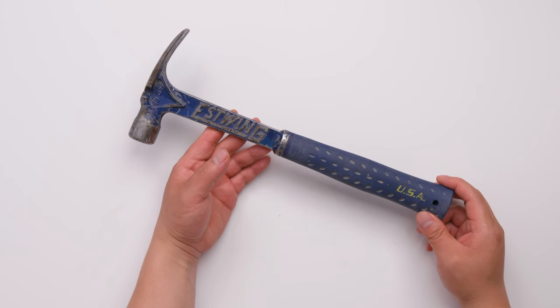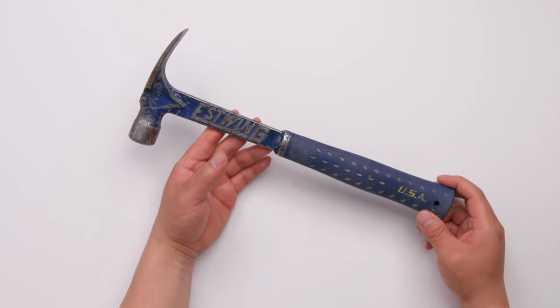This is Estwing Ultra Series Hammer, 15 inch, short handle rib claw with smooth face and shock reduction grip.